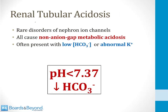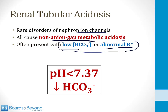Renal tubular acidosis disorders are rare disorders of nephron ion channels, and all of them cause a non-anion gap metabolic acidosis, and many of them present with low bicarbonate or abnormal potassium. This is often how they are detected, either on routine blood work that is abnormal or through symptoms from abnormal potassium. I've written the hallmark features of a metabolic acidosis at the bottom of the screen.